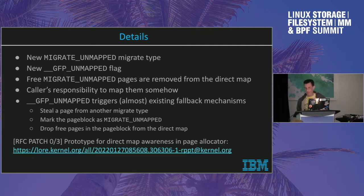I am not a huge expert on the page allocator, so I could have missed something really important. I still run into issues with TLB flushing here and there. But does this look sane to you?